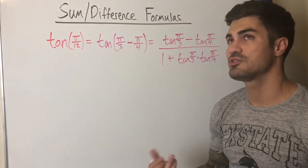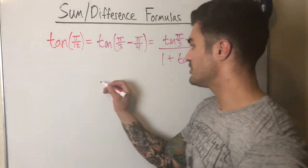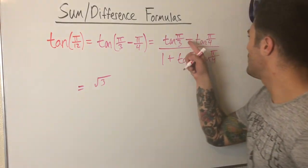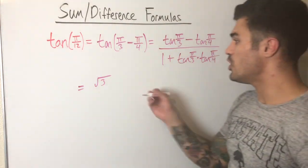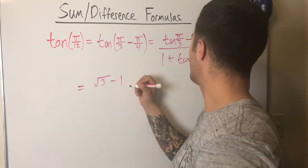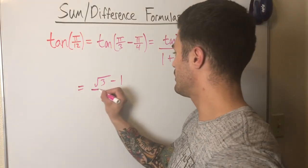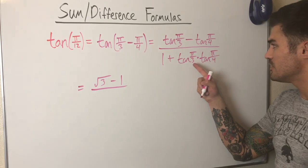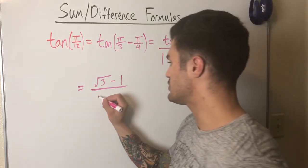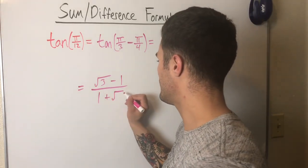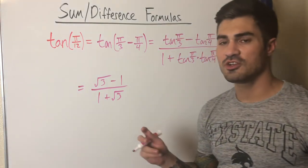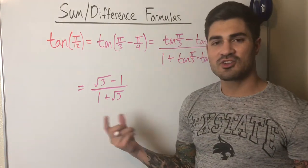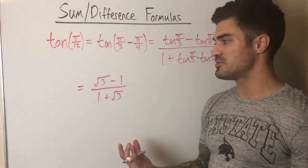Evaluating: tan(π/3) = root 3, and tan(π/4) = 1. So the expression becomes (root 3 − 1) over (1 + root 3 · 1), which simplifies to (root 3 − 1) over (1 + root 3).